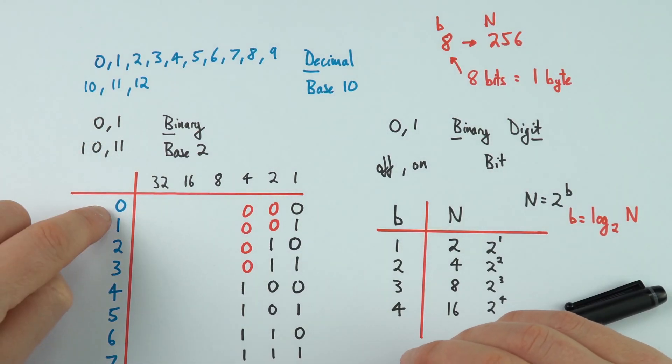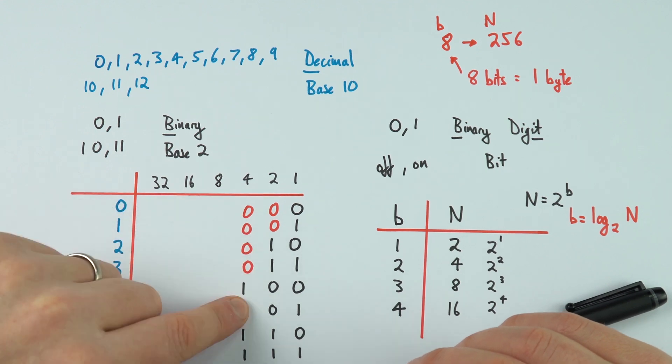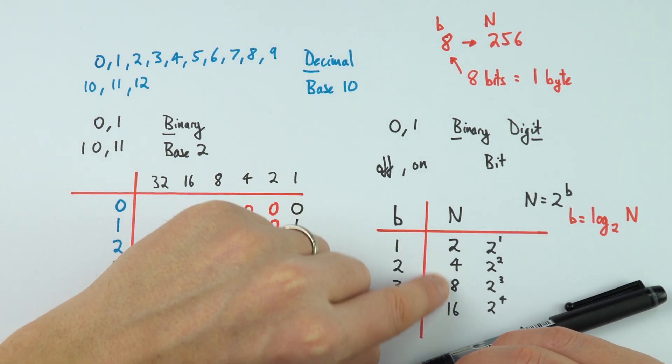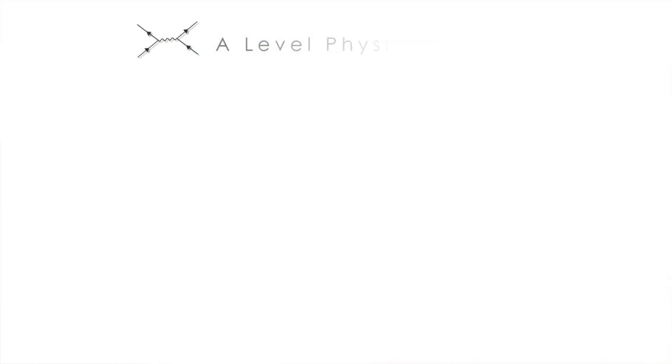So, that was just a brief introduction about the link between decimal numbers and binary, and how the number of bits gives us this many possible variations of values that can be displayed. Thank you.